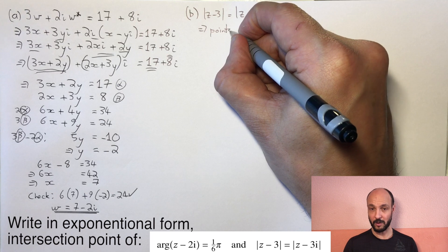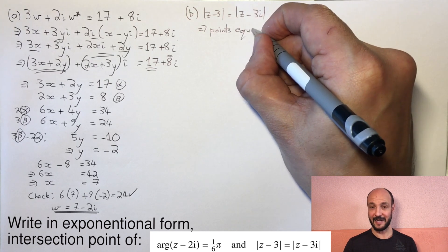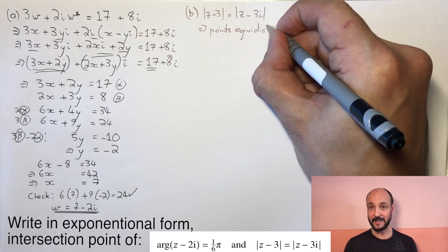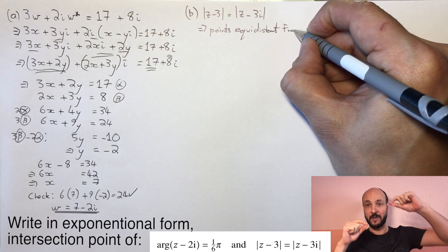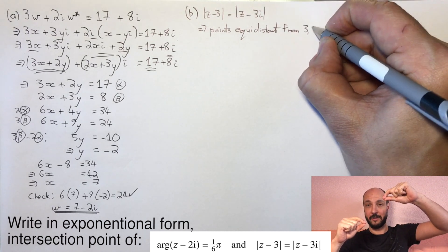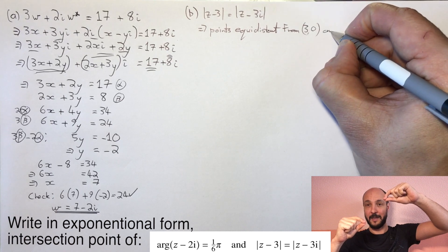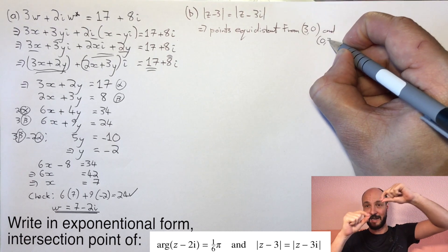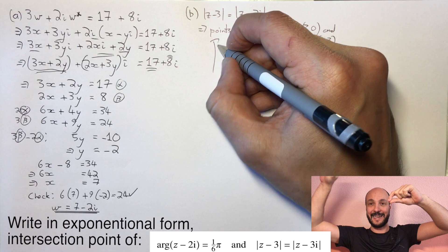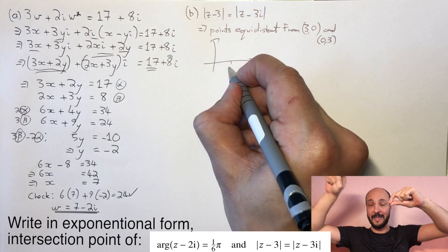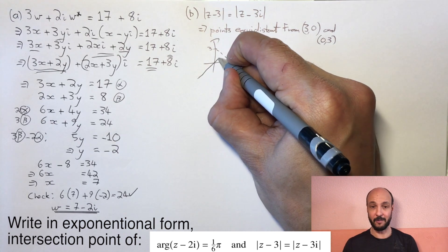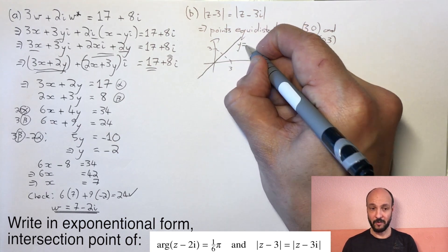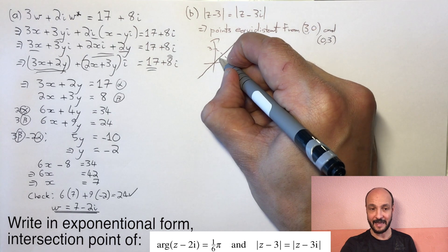So in Cartesian coordinate terms, that's saying all points that are equidistant from 3, 0 and 0, 3. Well, to be equidistant from 3, 0 and 0, 3, it's the perpendicular bisector of the line joining them, which here is clearly the line y equals x. It's making a 45 degree angle with the x-axis there. So we've got one equation, y equals x.